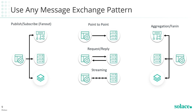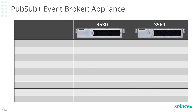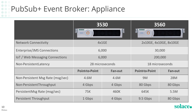Now that's a quick summary of the advanced features. So why would you pick one form factor over another? The main differences are in terms of connections, message throughput, deployment locations, and administrative overhead. The PubSub Plus Event Broker Appliance is available in two turnkey models: the 3530 and the 3560. The 3530 offers up to 6,000 connections, 4.7 million non-persistent or 450,000 persistent messages per second, and a latency of 28 microseconds. The 3560 offers up to 200,000 connections, 28 million non-persistent or 6 million persistent messages per second, with a latency of 18 microseconds. Nine of the top 12 global banks use these appliances to distribute market data.